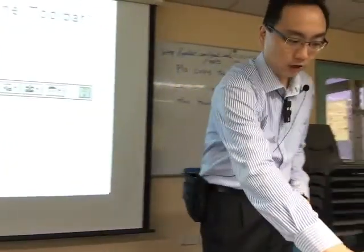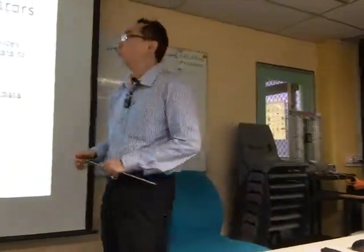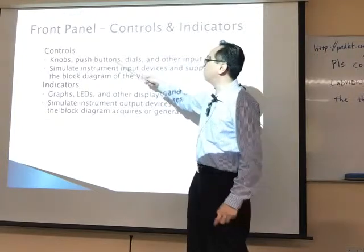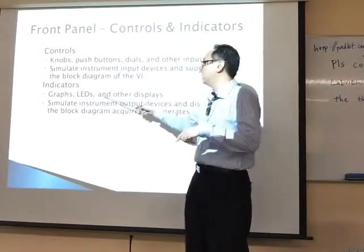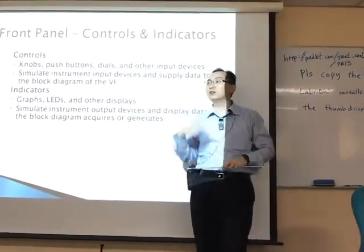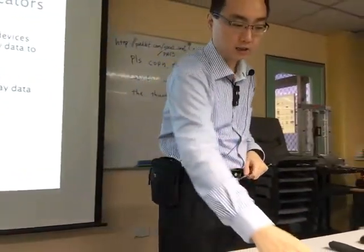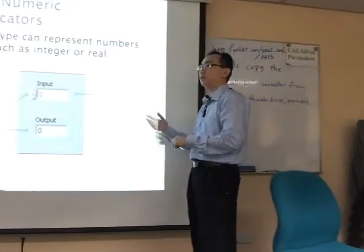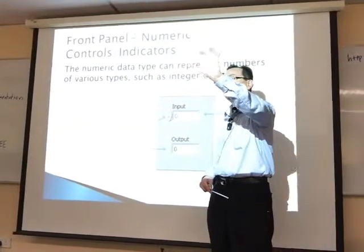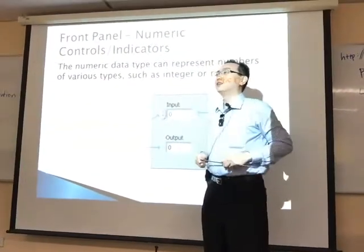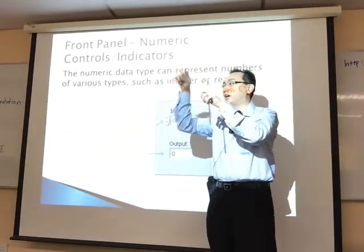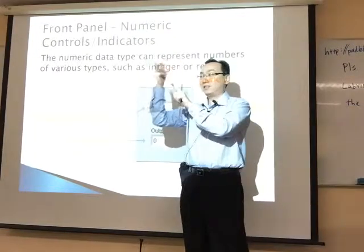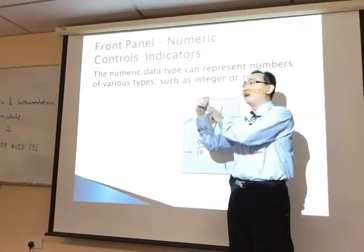Moving on — controls and indicators. You can have push buttons, graphs, LEDs and so on. Indicators are things the program displays on screen. Controls are values the user must enter. For example, I typed 10 and 10 as inputs, they went through a multiply function, and the output — 100 — is the indicator.